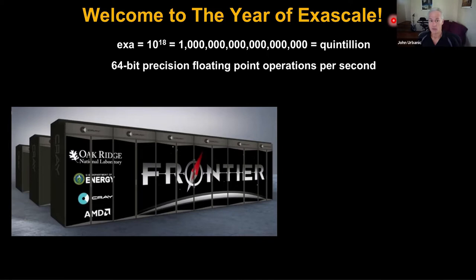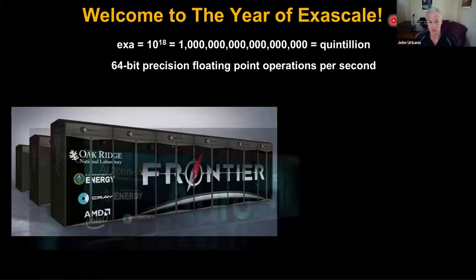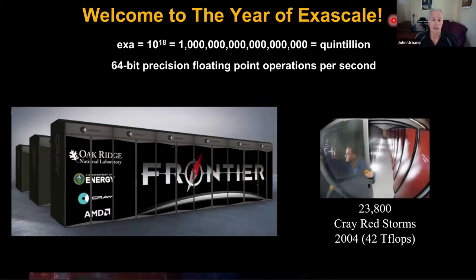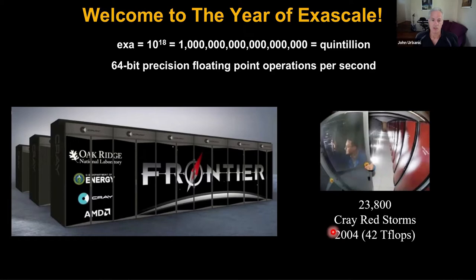These machines — Frontier and Aurora here in the United States — are going to be stood up this year. China is also racing to build potentially the first exaflop machine. To put this in perspective compared to previous machines: a machine in 2004 called RedStorm could do 42 teraflops. These new machines are the equivalent of 23,000 of those, giving you some idea of the pace of progress in the world of supercomputing.